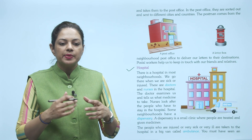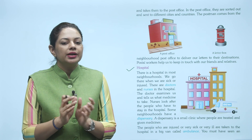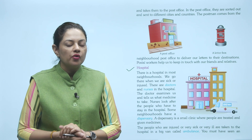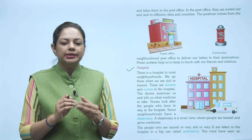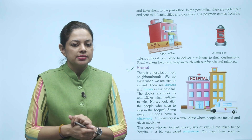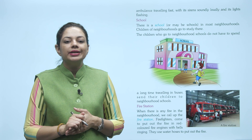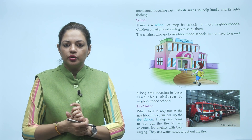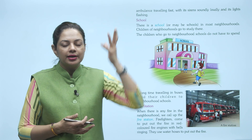Some neighborhoods have a dispensary. Dispensary kya hoti hai? A dispensary is a small clinic where people are treated and given medicines. Dispensary ek chhote clinic hote hain jisme logon ka ilaaj kiya jaata hai aur unhe dawaaiyaan di jaati hain. The people who are injured or very sick are taken to the hospital in a big van called ambulance. Jo log zyada bimaar ho jaate hain, unhe hospital le jaana padta hai — jis vehicle mein le jaate hain use ambulance kehte hain. You must have seen an ambulance traveling fast with its sirens sounding loudly and its lights flashing. Ambulance bahut tez chalti hai, uska siren bahut tez awaaz karta hai, aur uski red light flash hoti rehti hai.